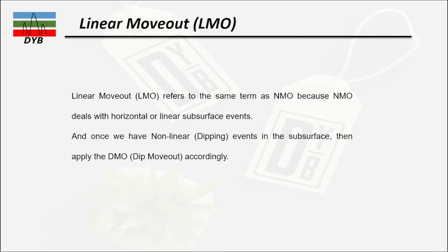The third concept is LMO — linear move out. Linear move out actually refers to the same term as normal move out, because NMO deals with horizontal or linear subsurface events. When we don't have non-linear or dipping events, we apply the NMO corrections to the data, then apply DMO corrections accordingly. It should be clear that linear move out is a similar term for normal move out.